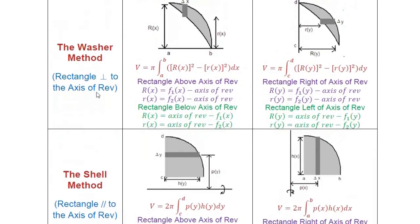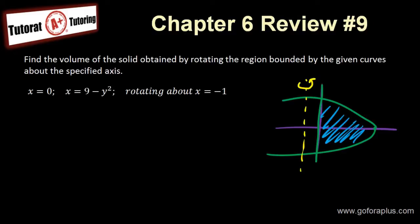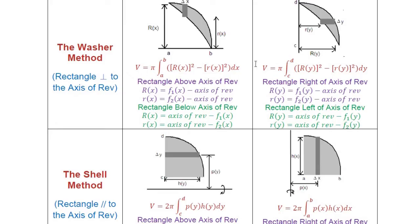So which method should I choose? You have to look at the rectangle. Do I draw the rectangle vertically or horizontally? If I draw the rectangle vertical, it will be parallel to the axis, and the height would require isolating y, which introduces a square root. A horizontal rectangle just subtracts this vertical line from the curve — much easier. If the rectangle is horizontal, it's perpendicular to the axis, so I choose the washer method.